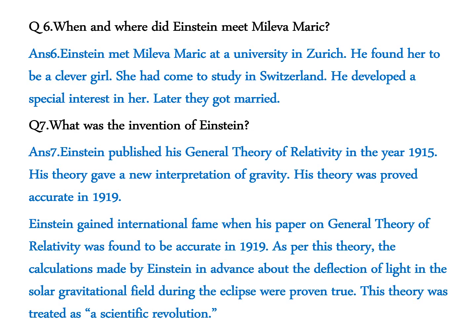Question 7: What was the invention of Einstein? Einstein published his General Theory of Relativity in the year 1915. His theory gave a new interpretation of gravity and was proved accurate in 1919. Einstein gained international fame when his paper on the General Theory of Relativity was verified in 1919. As per this theory, the calculations made by Einstein about the deflection of light in the solar gravitational field during the eclipse were proven true. This theory was treated as a scientific revolution.